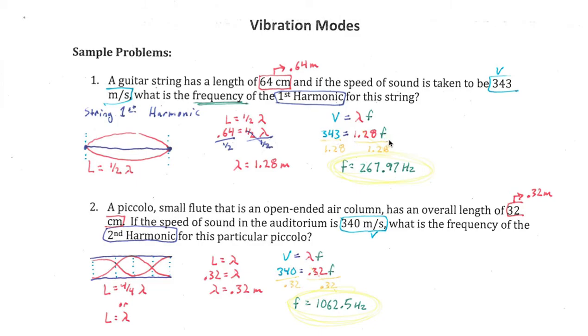So in order to get frequency by itself, I'm going to have to get rid of the 1.28. I can do that by dividing by 1.28 so that this cancels. I'm left with frequency then, and of course if I divide one side I also have to divide the other side as well. So I'm left with frequency equals 267.97 hertz, or we could round that off to 268 hertz, would be perfectly fine as well.